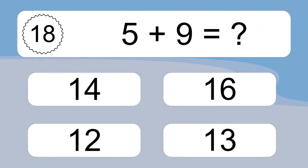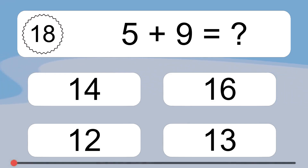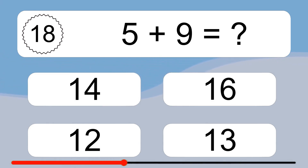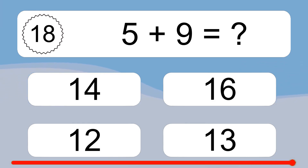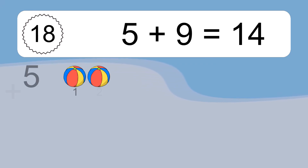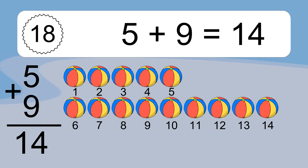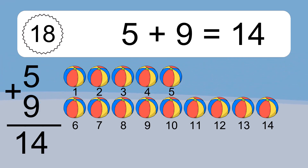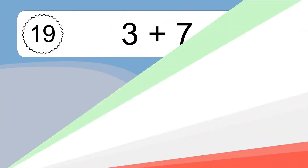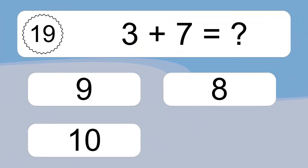5 plus 9 equals what? 5 plus 9 equals 14. Let's count it. 1, 2, 3, 4, 5, 6, 7, 8, 9, 10, 11, 12, 13, 14.